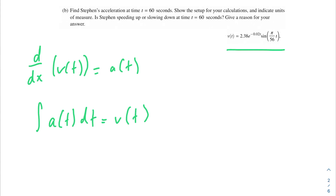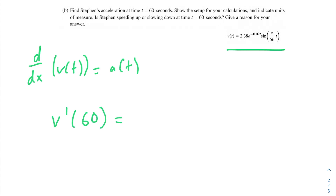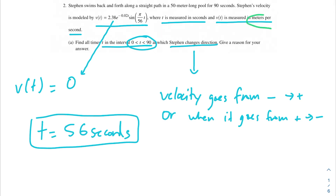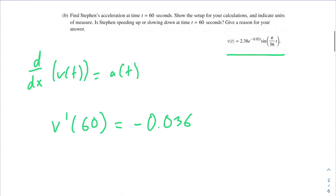To find the acceleration at a certain time, we take the derivative of v of t at 60 seconds. This is a calculator problem — no need to take the derivative by hand. This gives us negative 0.036. As for units: since velocity was measured in meters per second, and acceleration is the derivative with respect to time, the units are meters per second per second (meters per second squared).